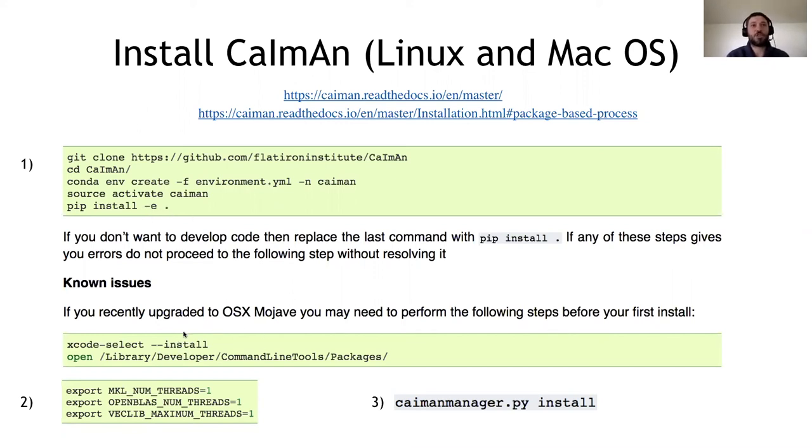You might have some issues if you're running on Mac, but I doubt since probably most of you are developers, you probably have this already installed. In order to optimize performances, you want to set all the number of threads for any possible linear algebra library you have on your computer to one, so that processes don't interact with each other. And finally, with this command, CaimanManager.py install, you install an infrastructure that includes the demos, demo files, the movies that you might want to download.